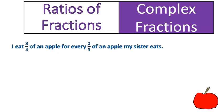Our first question: if I eat three-quarters of an apple for every two-thirds of an apple my sister eats, that is the information we're given. It's a ratio or a comparison of two different values — in this case a comparison of three-quarters to two-thirds.